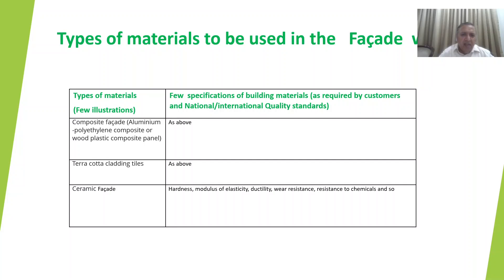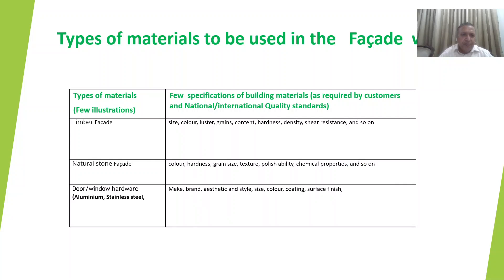For ceramic façade, important characteristics include hardness, modulus of elasticity, ductility, wear resistance, and resistance to chemicals, which designers must take cognizance of. For timber façade, the relevant properties are size, color, luster, grains, content, hardness, density, and shear resistance. For natural stone façade, the important parameters are color, hardness, grain size, texture, polishability, and chemical properties.